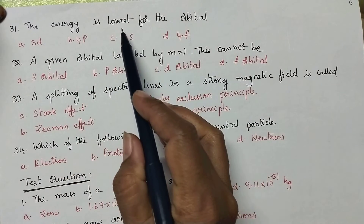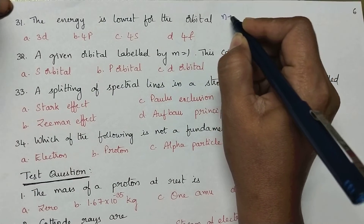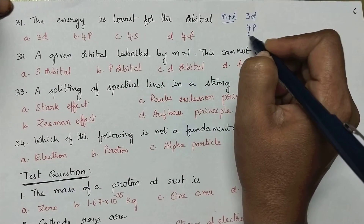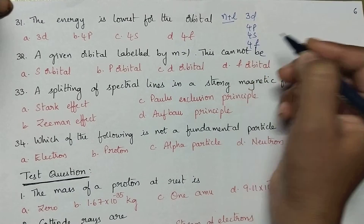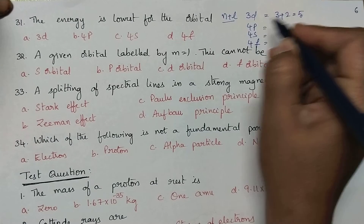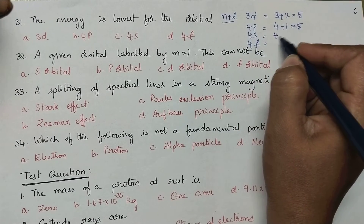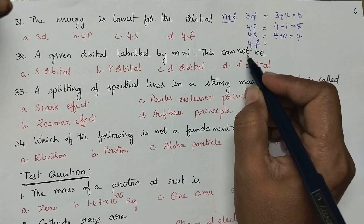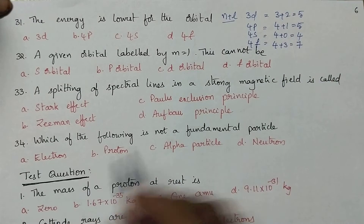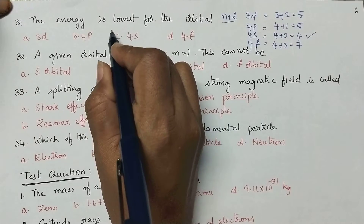The energy is lowest for which orbital: we have to calculate the n plus l value for all four orbitals — 3d, 4p, 4s and 4f. For 3d, it is 3 plus 2 equal to 5. For 4p, 4 plus 1 equal to 5. For 4s, it is 4 plus 0 equal to 4. For 4f, it is 4 plus 3 equal to 7. From the n plus l values, it is clear that 4s orbital has the lowest energy.